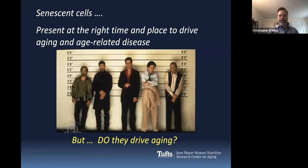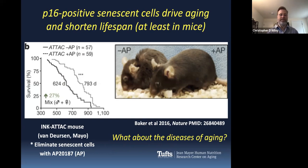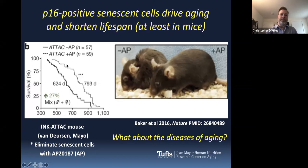The question has always been, do they actually drive aging? This is work done at the Mayo Clinic in which they made a mouse where they could eliminate a set of senescent cells by giving a drug abbreviated as AP. They gave it to these mice and continually eliminated senescent cells as they got older, starting at middle age. If you look at survival as a percentage, this is a normal mouse lifespan with all of its senescent cells. Mice that had their senescent cells removed lived about 27% longer, which is pretty considerable.